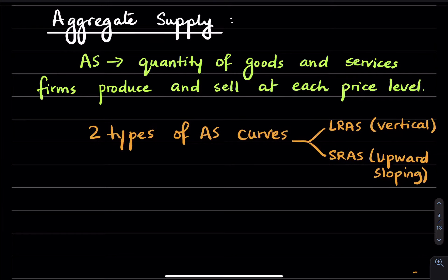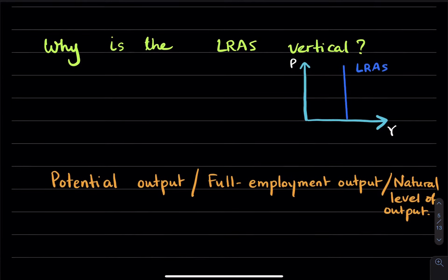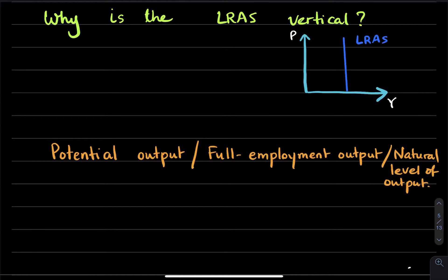In this video, we're going to be talking about aggregate supply. Recall that there are two types of aggregate supply curves: the long-run aggregate supply, which is vertical, and the short-run aggregate supply, which is upward sloping. We'll talk about why they look the way they do. Aggregate supply is the quantity of goods and services that firms produce and sell at each price level. We'll start with the long-run aggregate supply curve and then get to short-run aggregate supply.